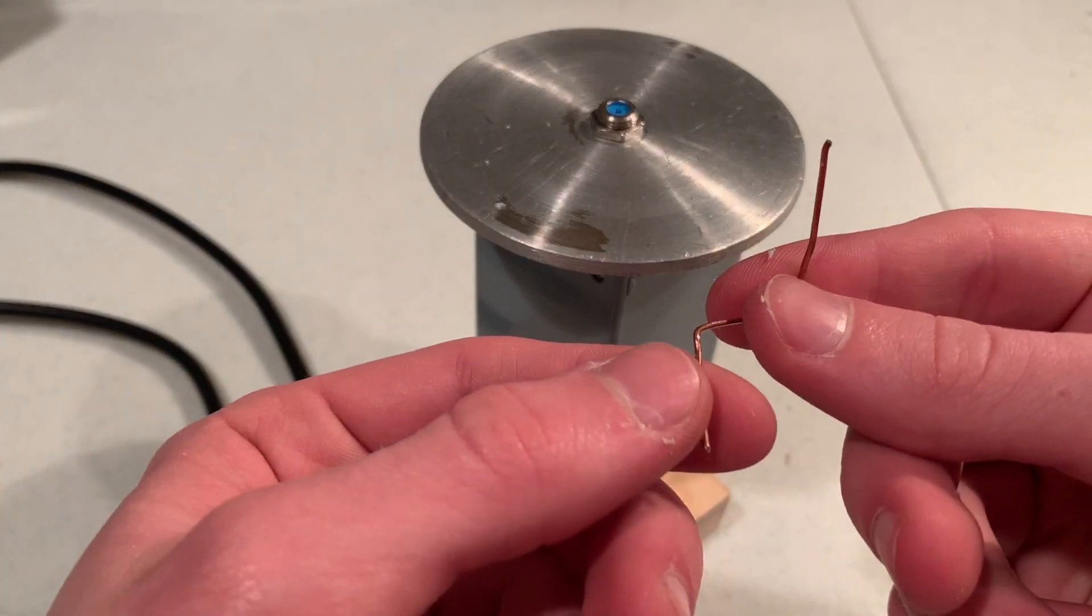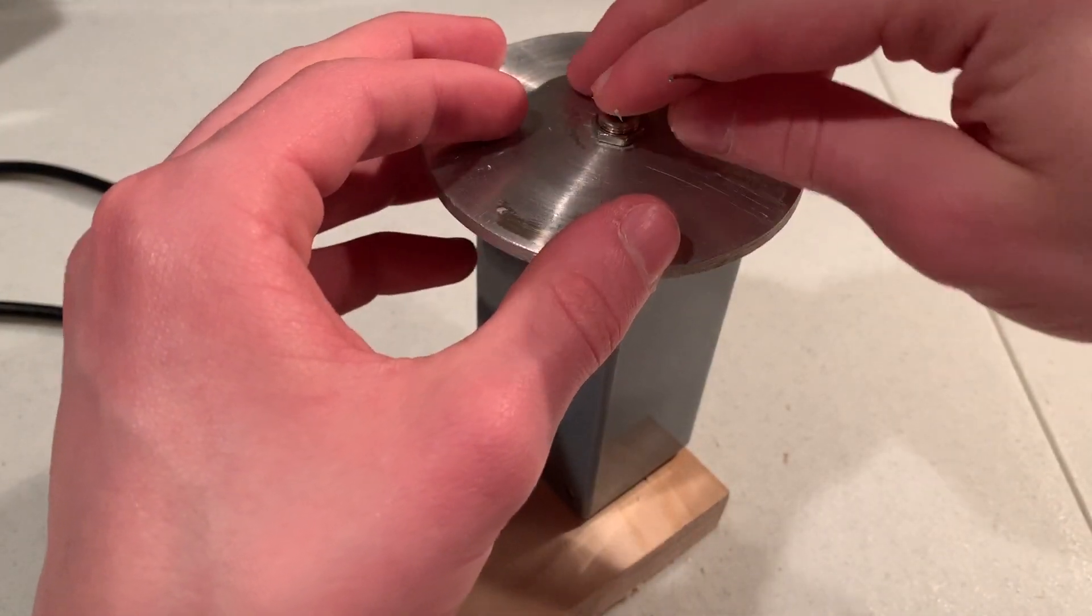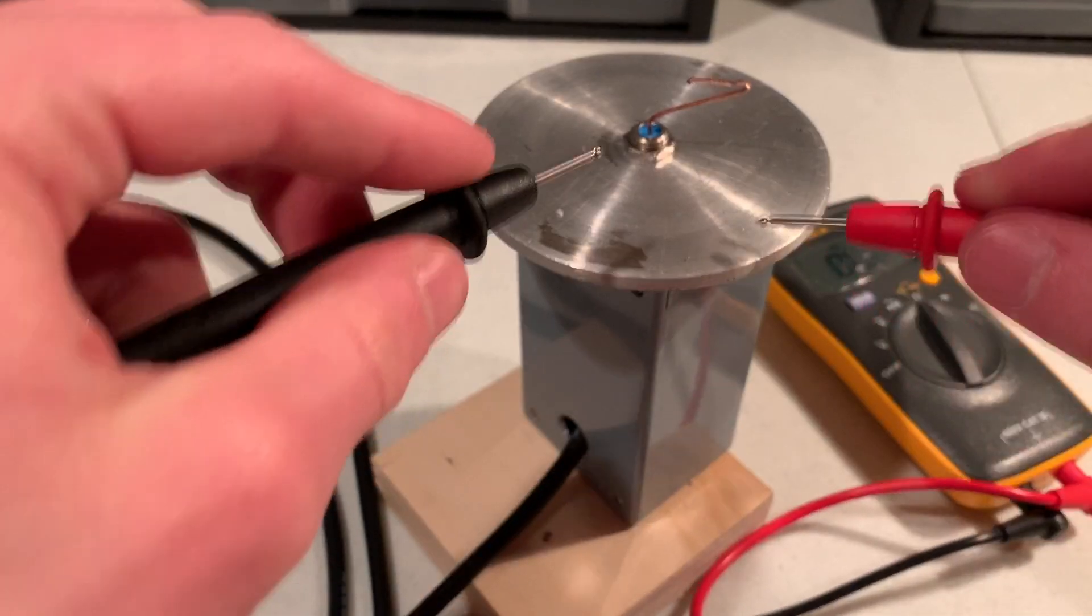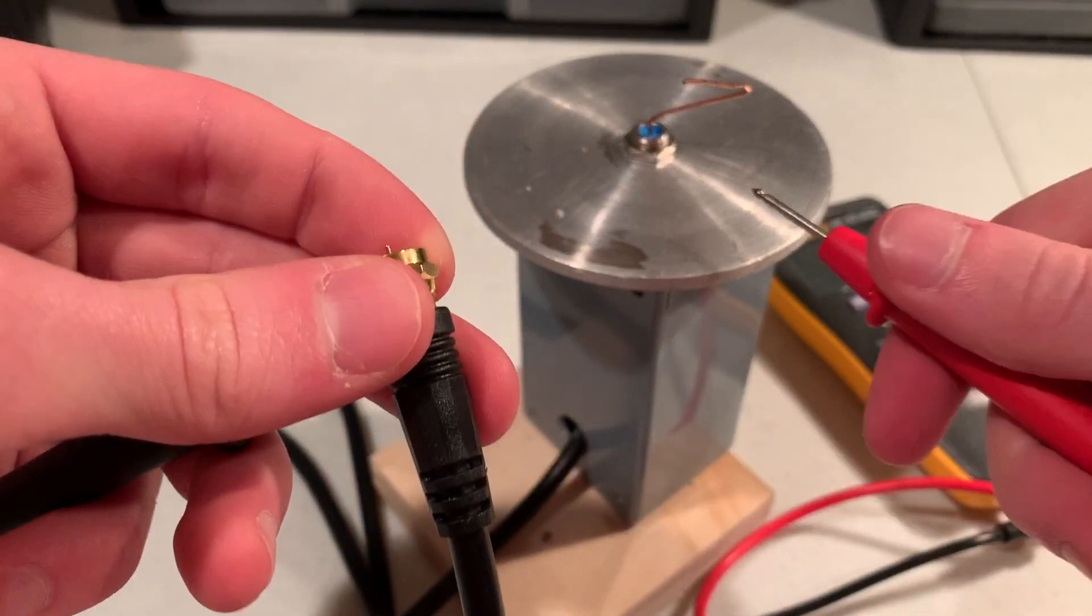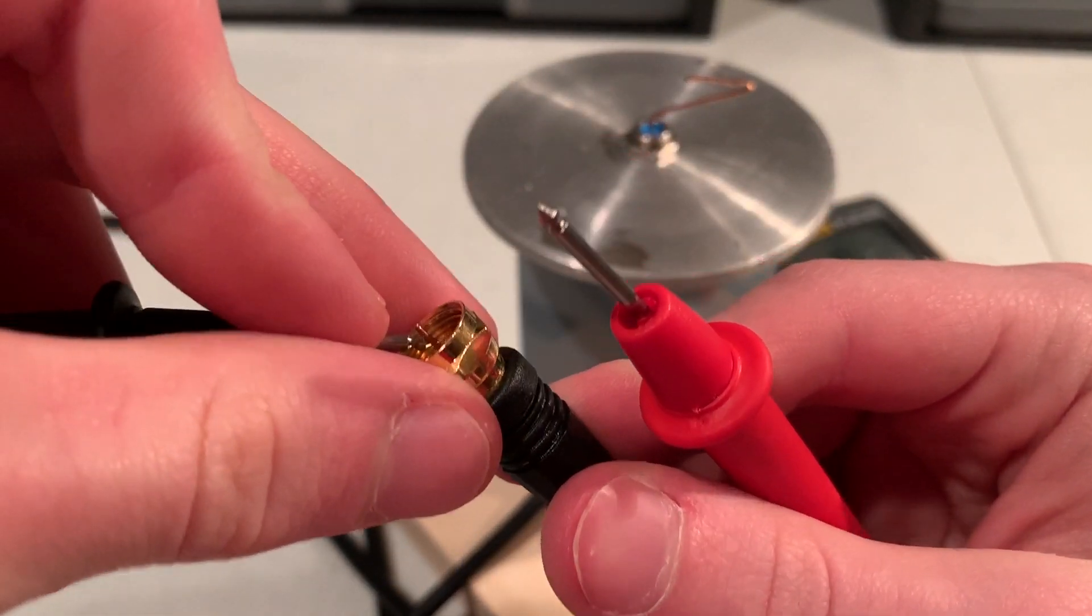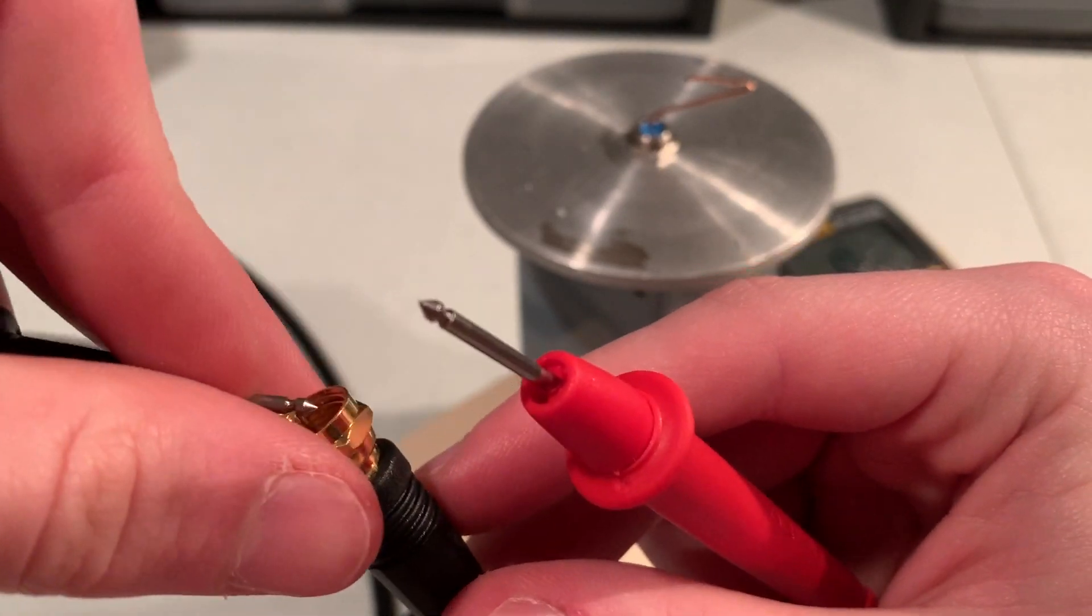And then once I had the whole assembly together, I wanted to test it out to make sure everything was connected where it should be. And then also everything was not connected where it shouldn't be. So I just used this random piece of wire here to check the connections and everything seemed to work out well. And then afterwards I was thinking to myself what I was going to use for the actual material for the antenna.